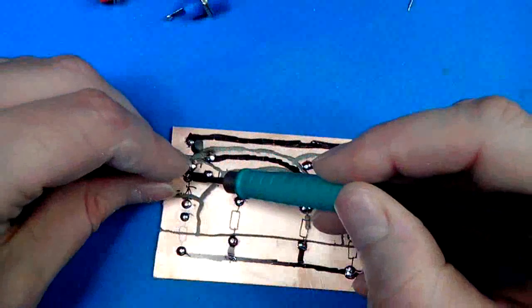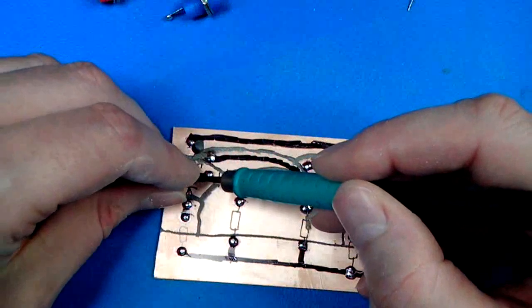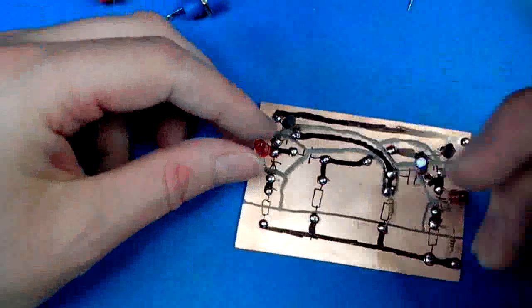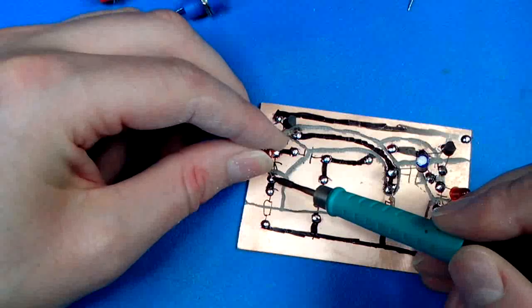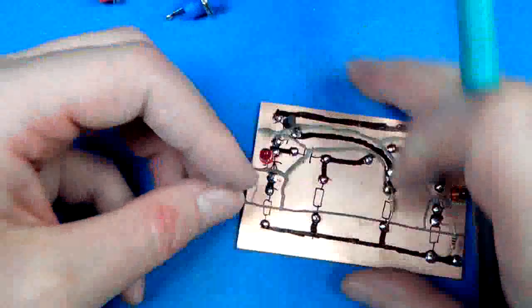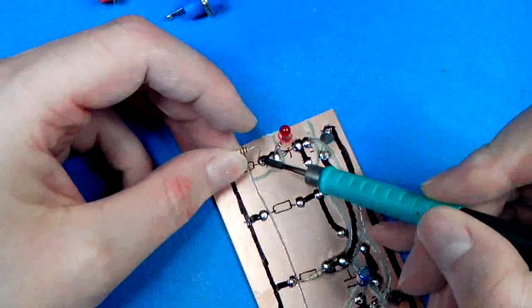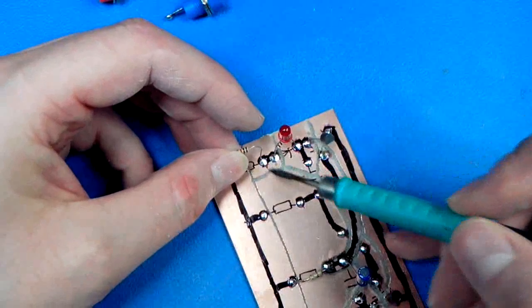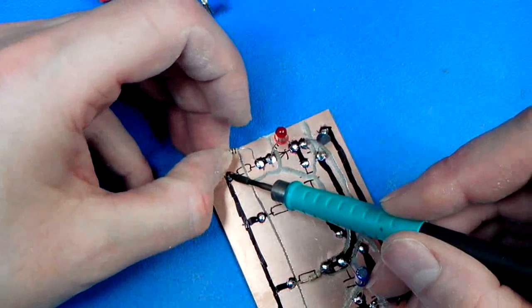Another advantage is that some components come with very small leads, or you cut them off very short already. They're too short to stick in the breadboard, but using this method there's no problem at all. For example, this resistor has very short leads - no problem.